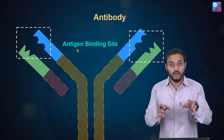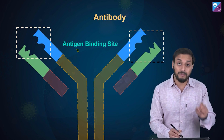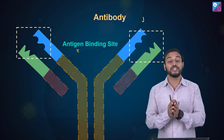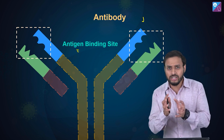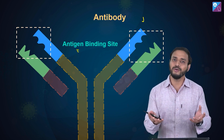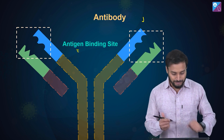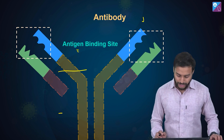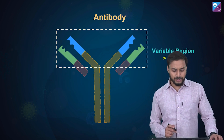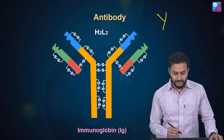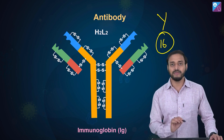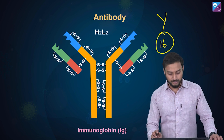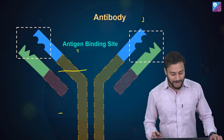The variable region is the site where antigens bind — the antibodies go and bind to antigens at these variable regions. The region is variable because slight conformational changes are needed for binding to occur. The rest of the structure is constant. In total, there are 16 disulfide bridges or bonds in this antibody structure.